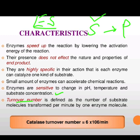Turnover number shows the efficiency of an enzyme — it represents how many substrate molecules one enzyme molecule converts into product. For example, if in one minute an enzyme converts 200 molecules of substrate into product, that is the turnover number. More the turnover number of an enzyme, more will be the efficiency of the enzyme.